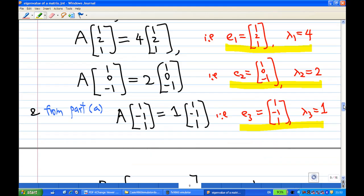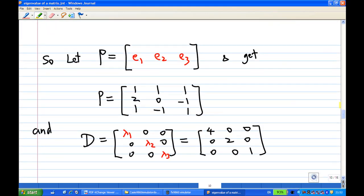So from this, we can form the matrix P. The columns of P are E1, E2, E3 eigenvectors. And so we get P equal to [1,1,1; 2,0,-1; 1,-1,1] for E1, E2, and E3. And the corresponding eigenvalues lambda 1, lambda 2, lambda 3 are 4, 2, and 1 in the corresponding columns.